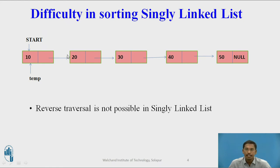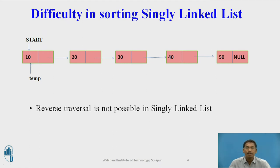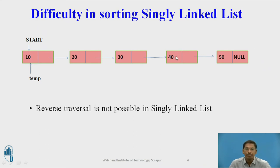What happens if we apply selection sort on a singly linked list for sorting? In selection sort, each node is compared with all remaining nodes, and swapping is done if the data present at the first node is greater than the second node. In bubble sort, two consecutive nodes or data are compared with each other. After one iteration, the maximum node will be stored at the last, and after the second iteration, the last two nodes will be getting sorted. The problem with bubble sort is every time we have to keep track of what nodes are getting sorted in the previous iteration. So it is better to apply selection sort for sorting a singly linked list.